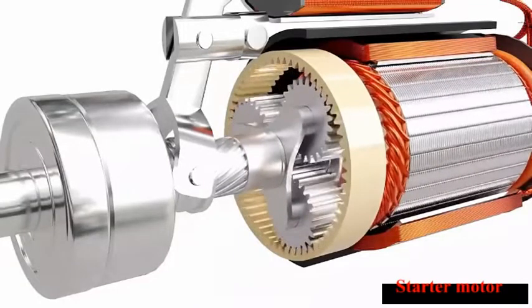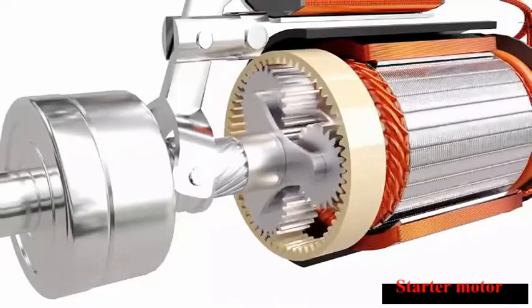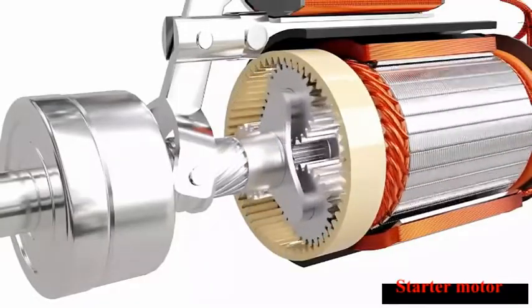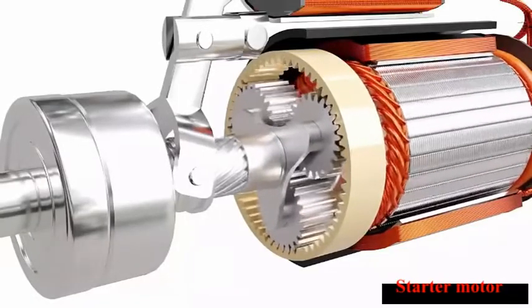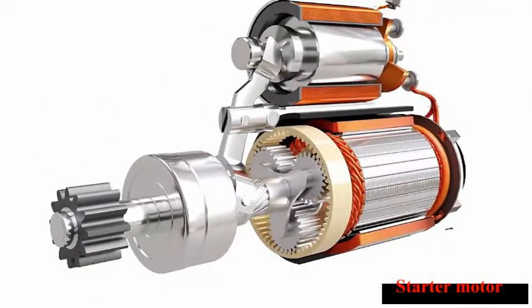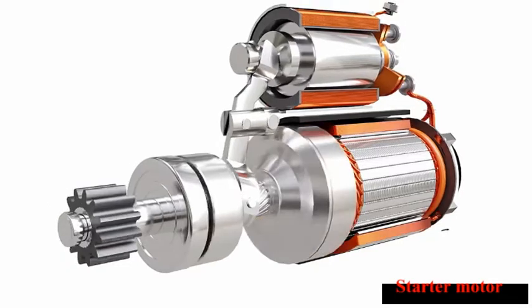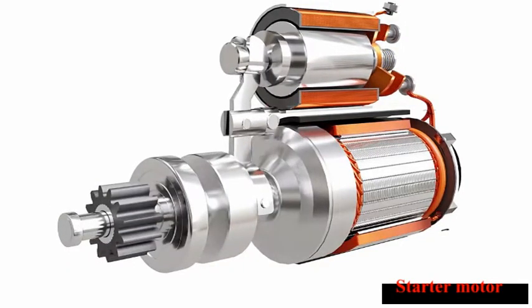As the engine is started, the pinion needs to be disengaged from the flywheel to prevent back drive of the motor, which might damage it due to the excessive speed. This is done by releasing the ignition switch, which de-energizes the solenoid and the pinion returns back.